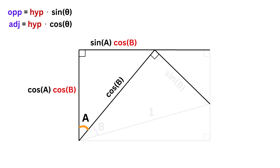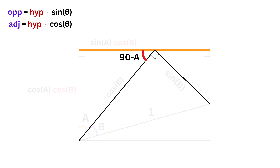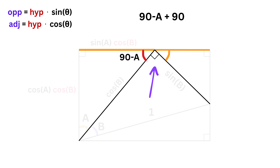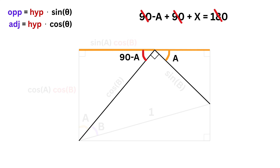Now notice carefully — if this is angle A, then this angle will be equal to 90 minus A. Now consider this straight line. If we add up all these three angles, their sum must be equal to 180 degrees. So 90 minus A, plus 90, plus this angle X equals 180. This gives us X equals A, which means this angle is equal to A.